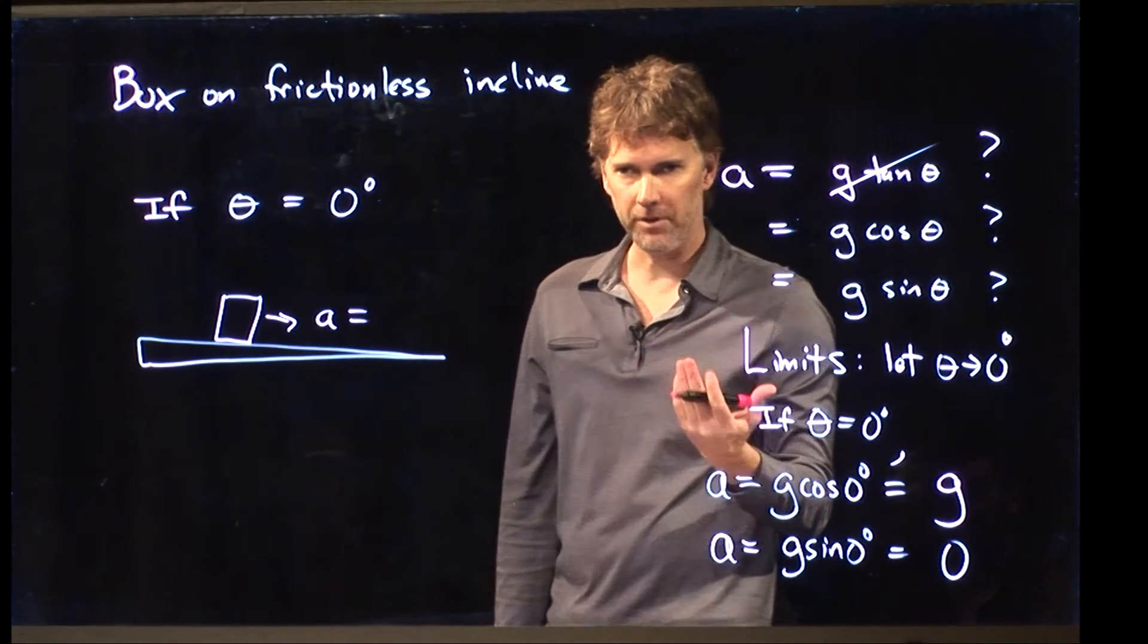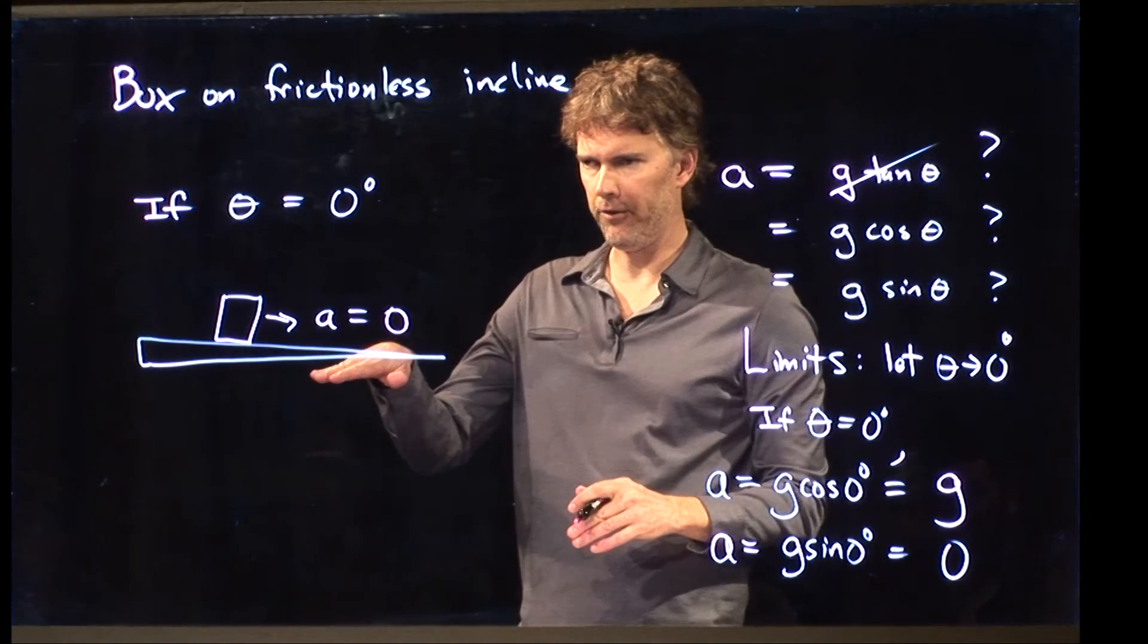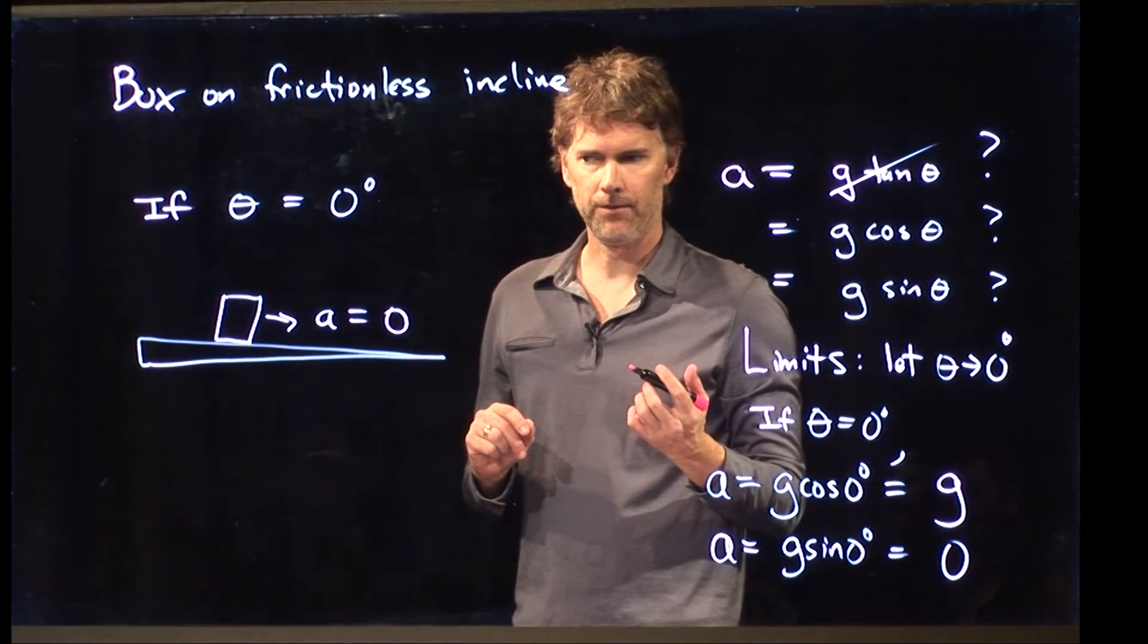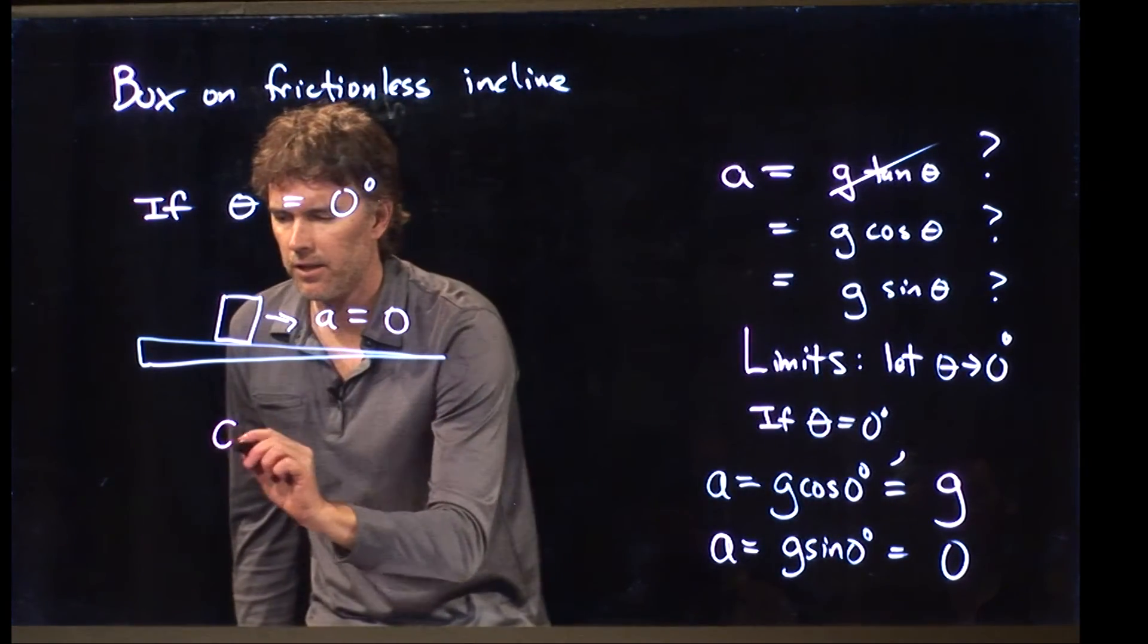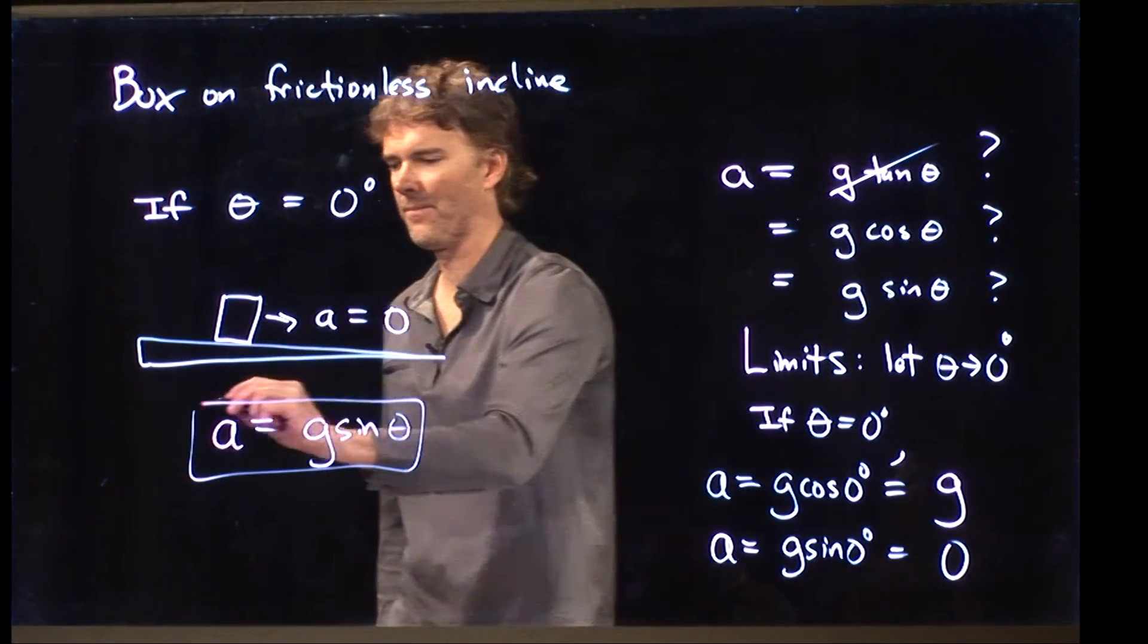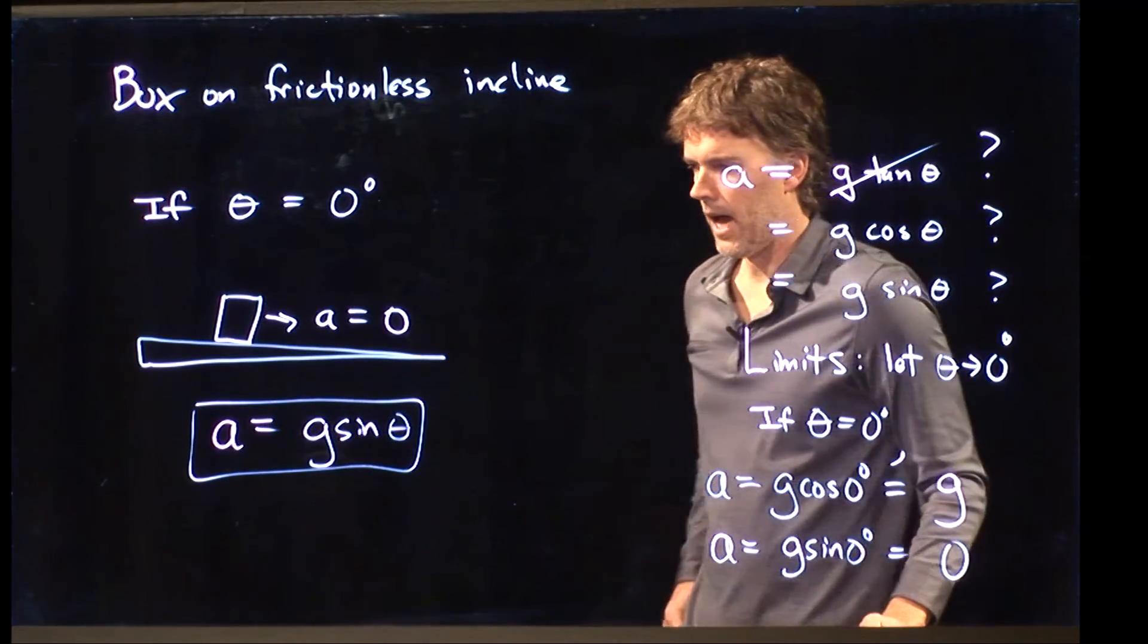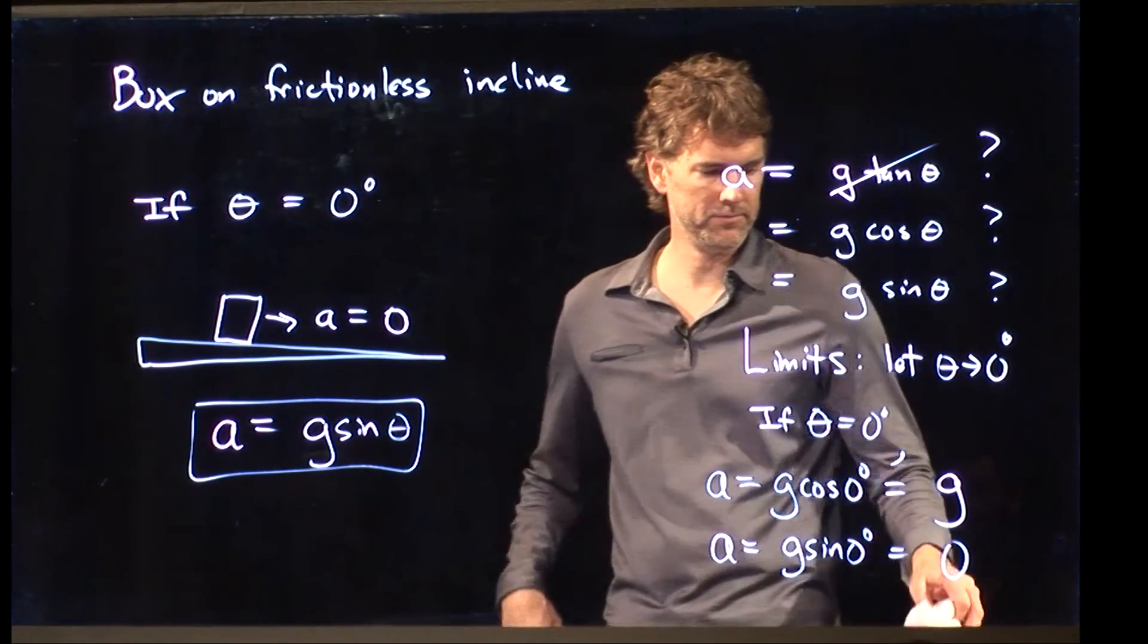What does it have to be? Zero. Right? If I put an object on a level surface, it's not going to suddenly rush to the right or to the left. It's got to be zero. And so immediately you know which the answer is. Acceleration down the incline is equal to g sine theta. Okay. Hopefully that's clear. If not, come see me in office hours. Cheers.